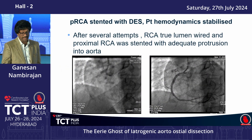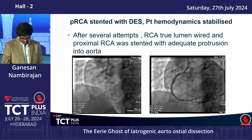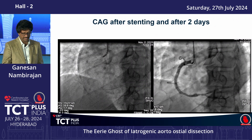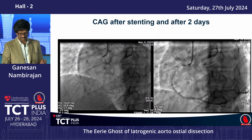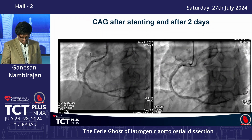Luckily, after several attempts, we were able to wire the true lumen in the proximal RCA. The dissection entry flap was sealed with a stent, with adequate extension into the aorta. We watched and followed the patient over the next three days with echo and CT — there was complete healing of the ascending aortic dissection as well.